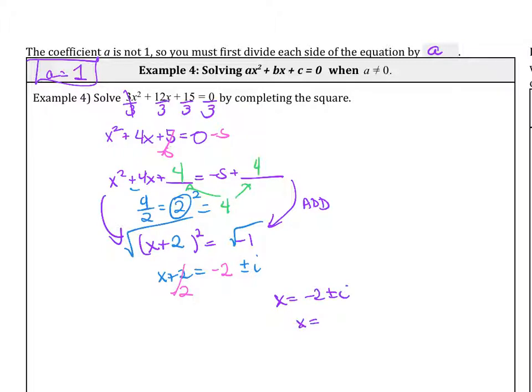So the answer is x equals negative 2 plus or minus i. Or you can separate it out. x equals negative 2 plus i. x equals negative 2 minus i. That might be something that Big Ideas asks you to enter.